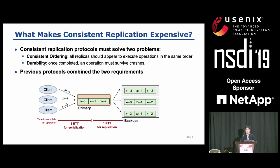In the example of primary backup replication, you can see the requests from clients are first serialized at the primary node, and then replicated to backups with the total order. As a result, client operations take two round-trip times to complete.